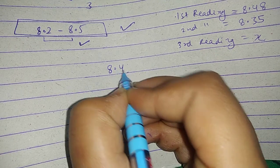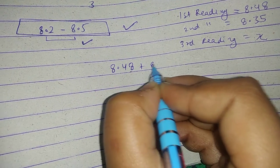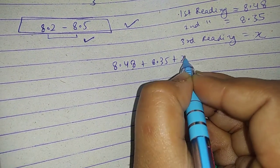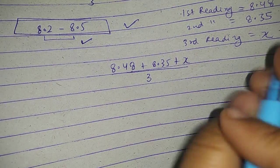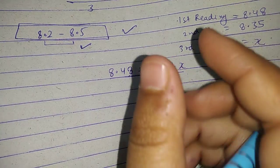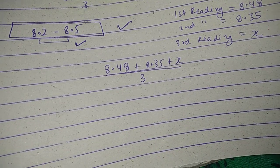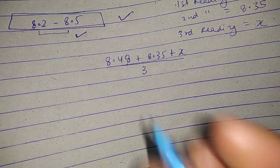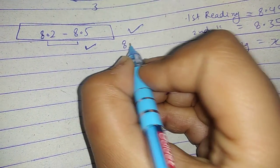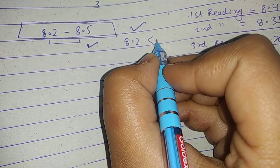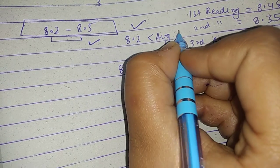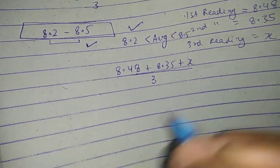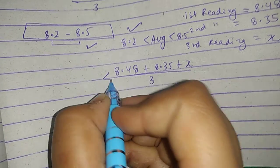8.48 plus 8.35 plus x divided by 3, which is the average, right? This is the average. We have to tell the normal reading, which is the average. The normal reading which is 8.2.